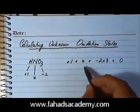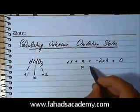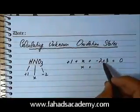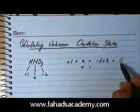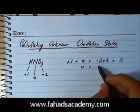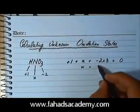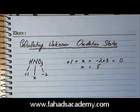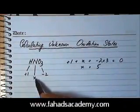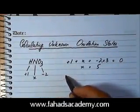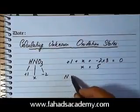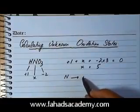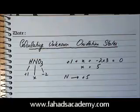Based on this, we can calculate: minus six would become plus six, and minus one would give five. So the value of X is five, meaning the oxidation state of nitrogen in HNO₃ is plus five.